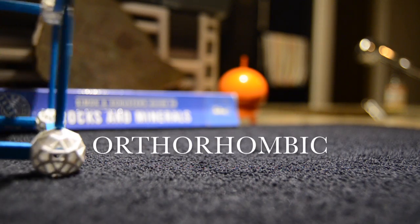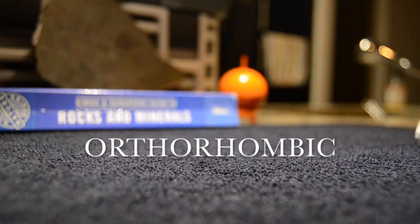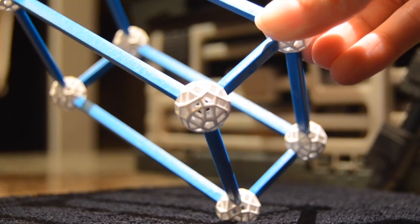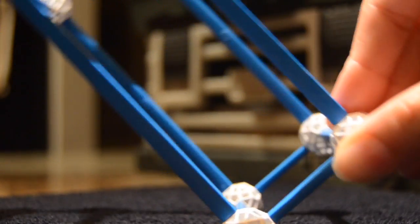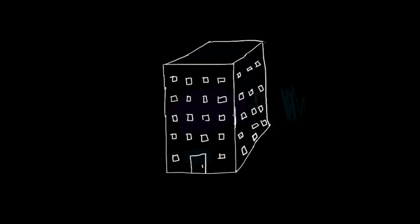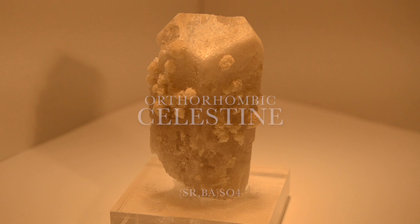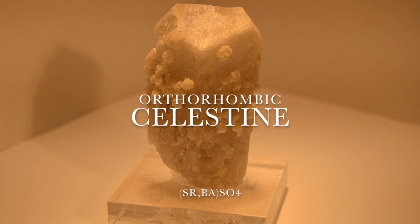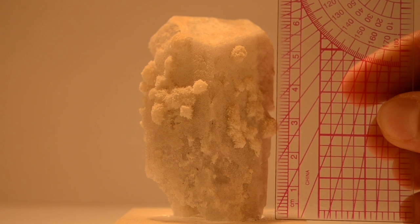The orthorhombic system has no equal axes and equal angles between each axis. Remember the refrigerator? If we extend it back in one direction, it kind of looks like a hotel or some sort of building. Celestine is an example of a mineral that belongs to the orthorhombic system.